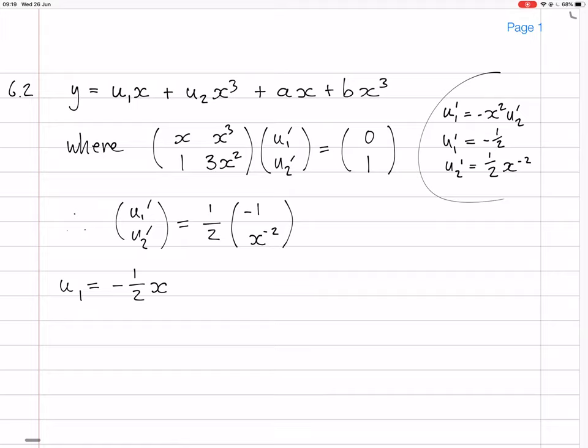So where was I? My u₁ is gonna be minus a half x. u₂ would be the integral of that, so x to the minus one, and there's a half there. That's gonna be a minus a half though, because minus one comes down and makes a minus sign. Is that right? Yeah, that's good.